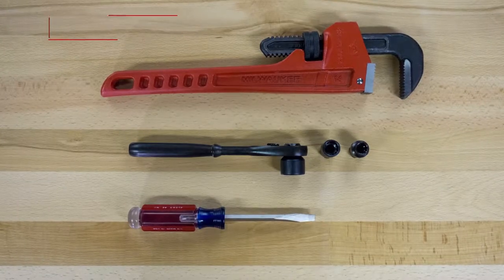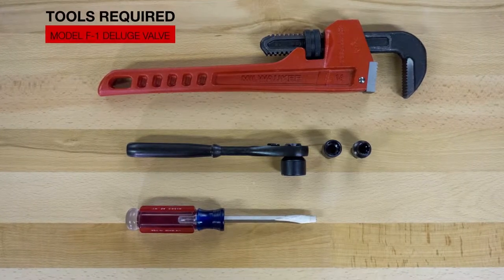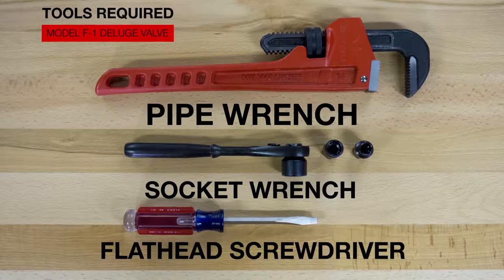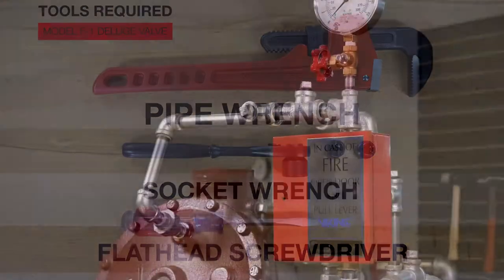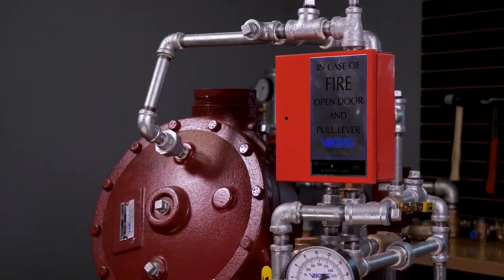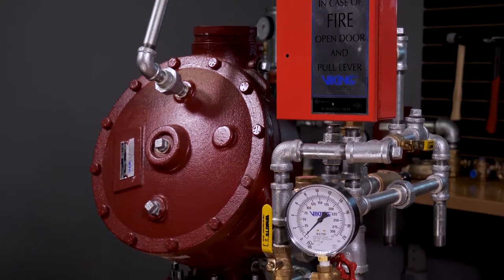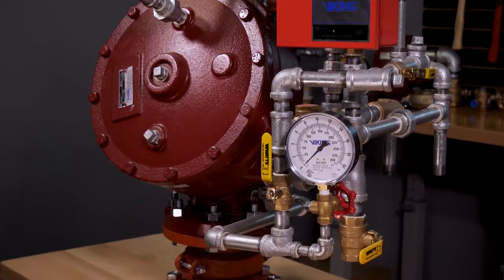Here are the tools that will be needed to install the repair parts. We will be covering the replacement of the rubber seat assembly. The rubber seat assembly is available in the clapper assembly kit and is also available as an individual replacement part.